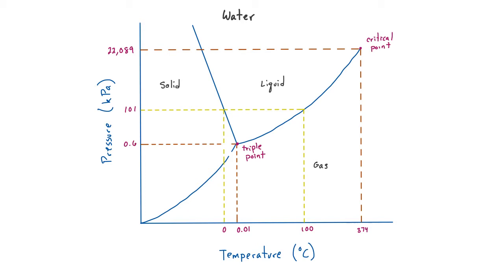Another important point on the graph is called the critical point, up in the right-hand corner. This is the point at which, at pressures and temperatures above this point, you will have supercritical fluid. For water, that pressure is 22,000 kilopascals and the temperature is 374 degrees Celsius — very high pressure and very high temperature. Supercritical fluid is a phase of matter that has similar properties to both gas and liquid; it flows like a liquid yet looks like a vapor.